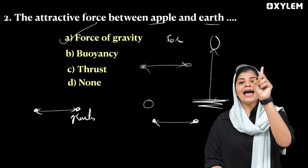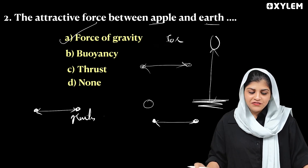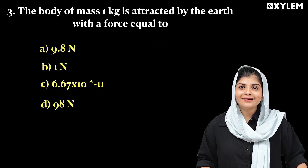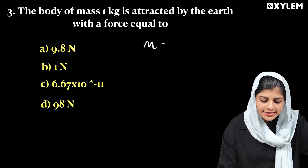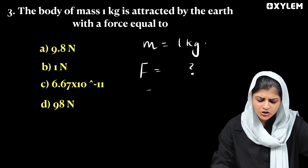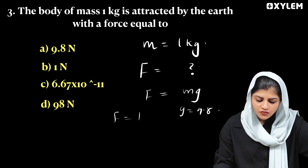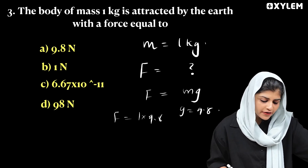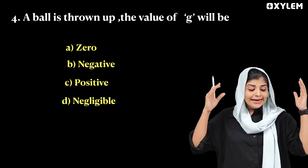Next question: A body of mass 1 kilogram is attracted to the Earth with a force equal to? We know mass m = 1 kg, and gravitational force F = mg, where g = 9.8. So F = 1 × 9.8 = 9.8 N. The unit is Newton, so 9.8 Newton is the right answer.